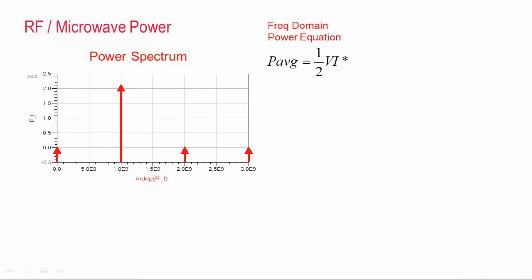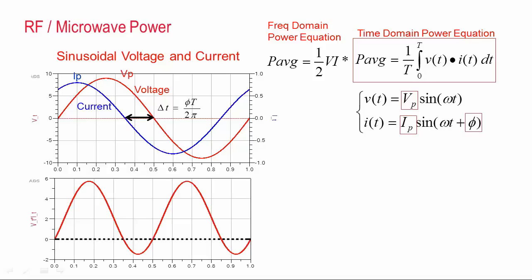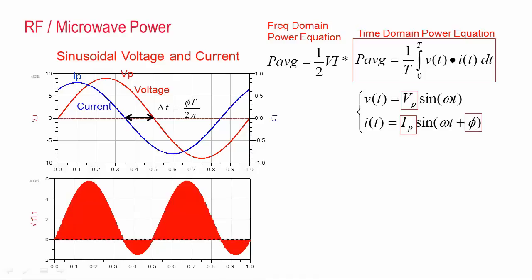To understand RF power amplifiers, we need to begin with an understanding of power. Most RF engineers are familiar with power from a frequency domain perspective, but to be successful as a PA designer, you'll also need to understand power from a time domain perspective. Here I'm showing a set of sinusoidal voltage and current waveforms in the time domain, and each of these can be described simply by sine wave equations with an amplitude offset and a phase offset. We can obtain the average power from this by multiplying these waveforms together and calculating the area under the resulting curve, and then dividing by the time.